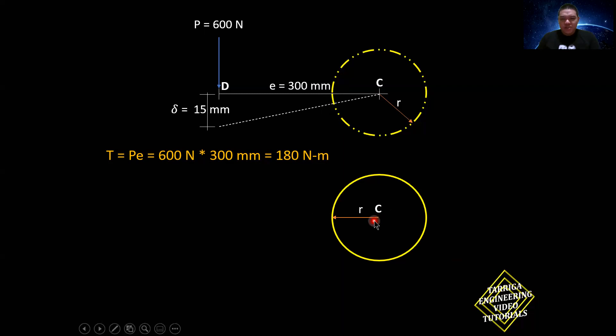This is the radius. It rotates counterclockwise and will create an angle of twist that we call in the torsion topic in strength of materials. So this one, this is approximately equal to 15 mm. Because the lever CD is rigidly attached to shaft BC, if there's movement here, that would be the movement also of shaft BC. And that will serve as our arc length.